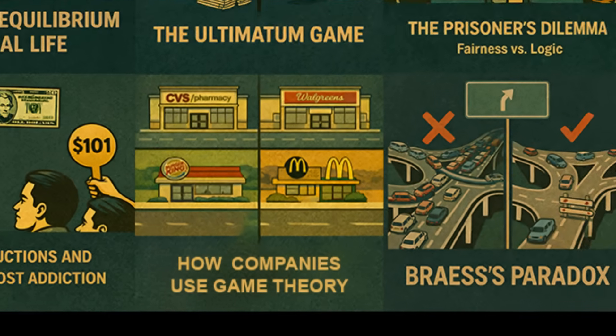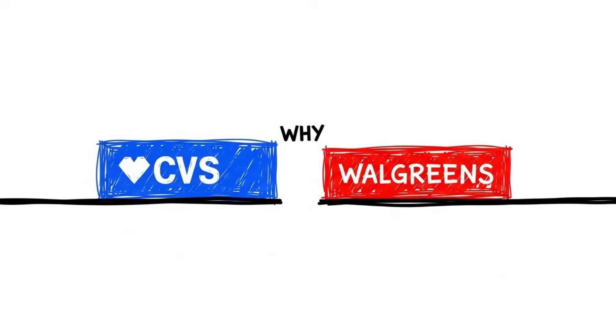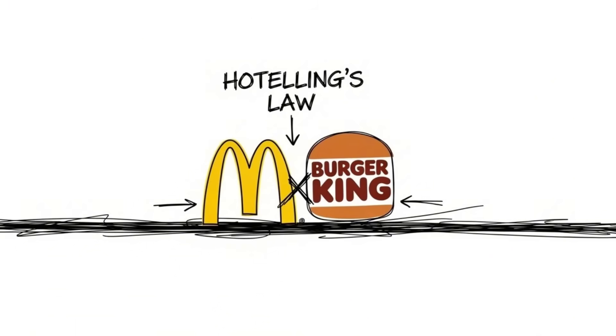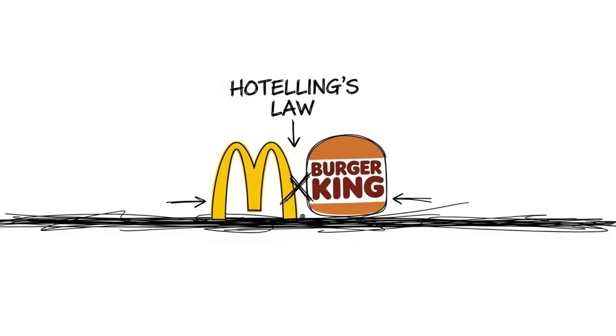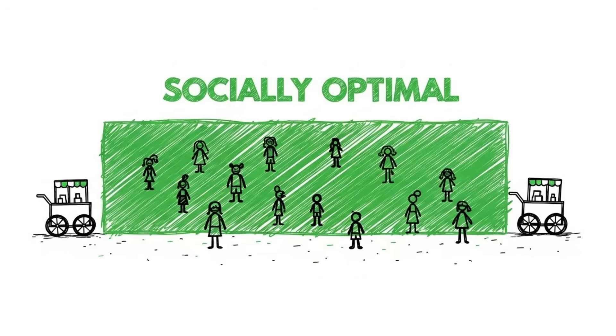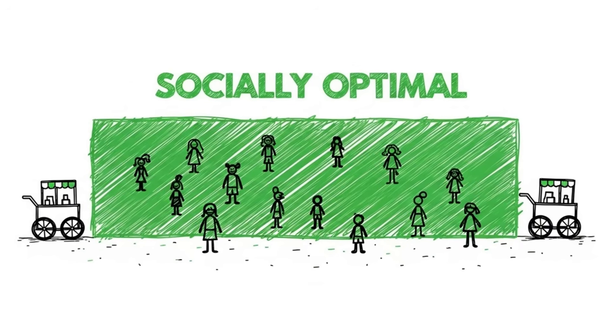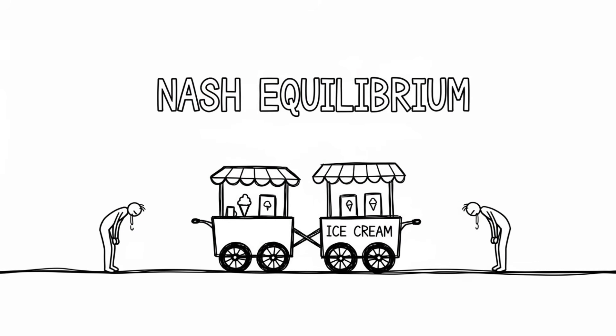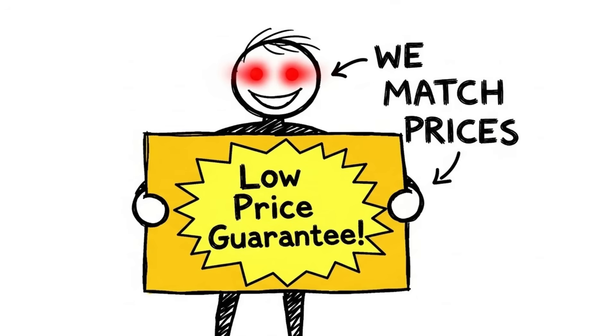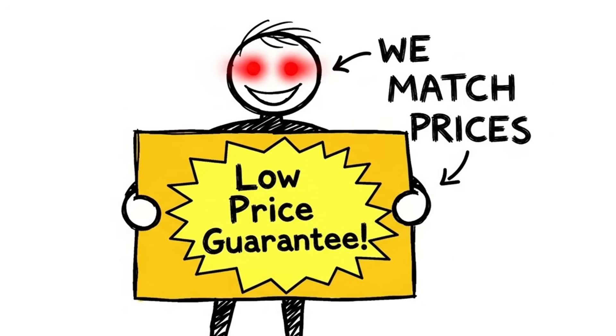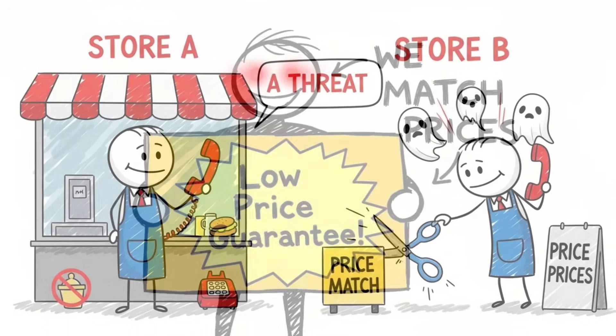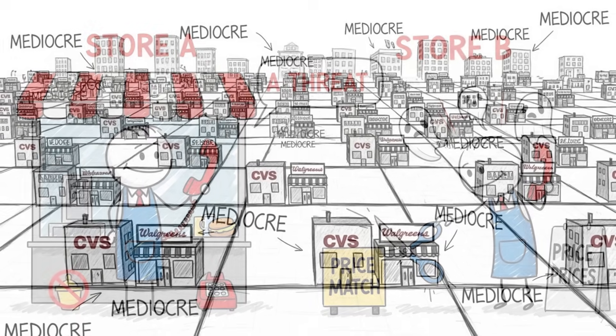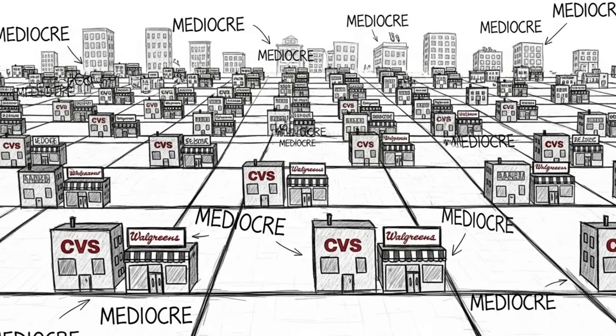How companies use game theory against you. Have you ever wondered why CVS and Walgreens are always right next to each other, or why Burger King is always across the street from McDonald's? This is Hoteling's law in action. If there is a mile-long beach and two ice cream carts, to maximize customers, they shouldn't space themselves out perfectly. They will both inch towards the center to steal the other's market share until they are back-to-back in the exact middle. They inconvenience you, the customer, to reach a Nash equilibrium of mediocrity. But it gets darker.